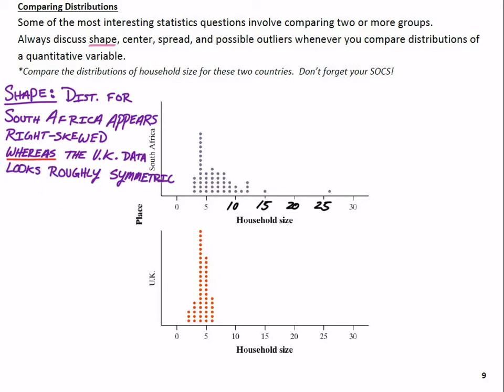We can say the distribution for South Africa appears right skewed, whereas the UK data looks roughly symmetric. And notice I put a red underline underneath the word whereas, because the key here is for you to use comparative language. Don't just state facts. If I just said distribution for South Africa appears right skewed, the UK data looks roughly symmetric, well, then I'm just like a robot. I'm just listing facts. You're getting paid as a statistician, hypothetically, right, to make these comparisons. We need to use comparative language. That's why that's key in this case.